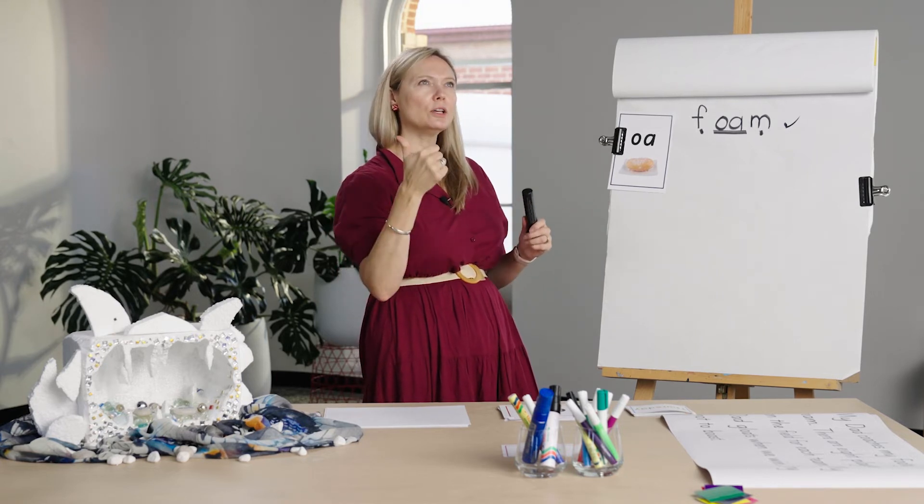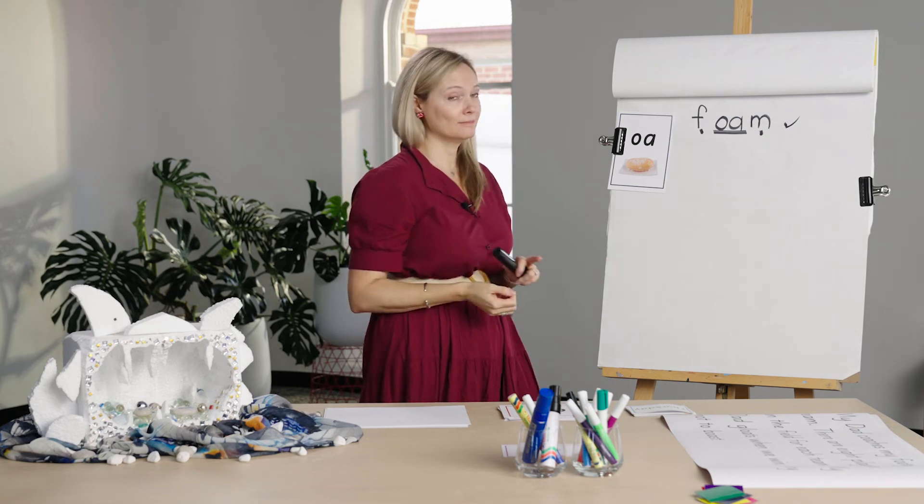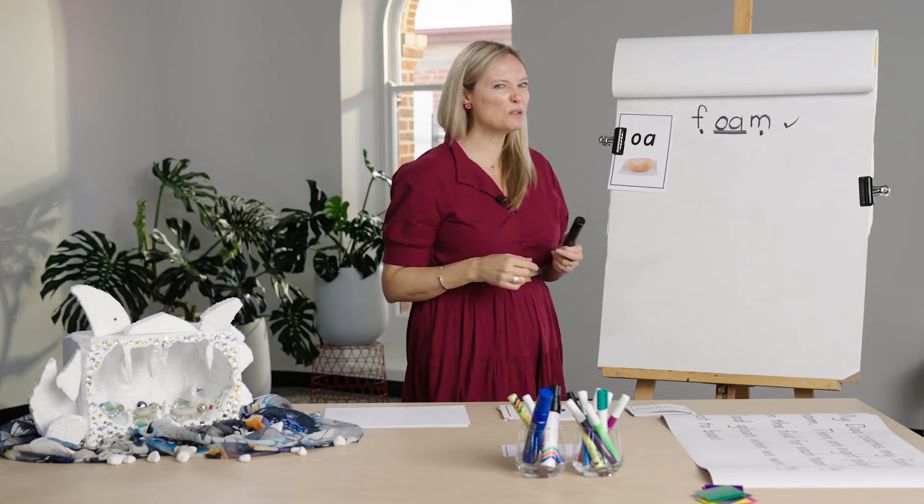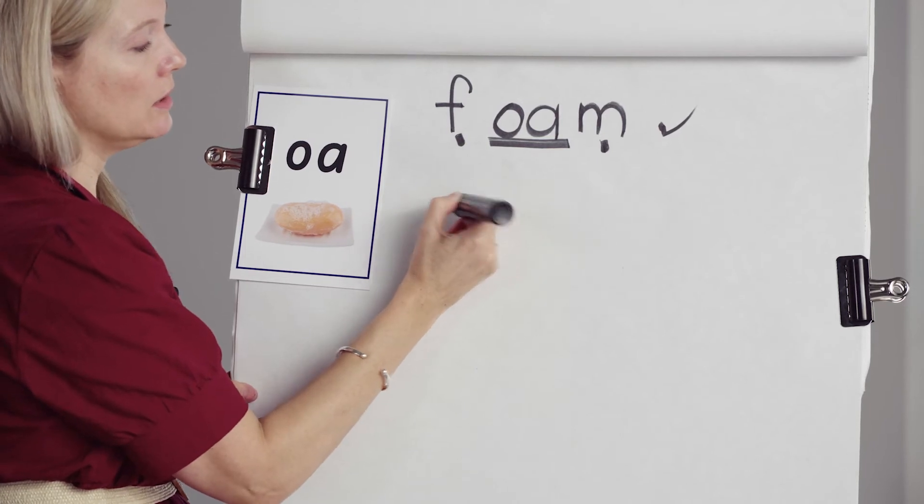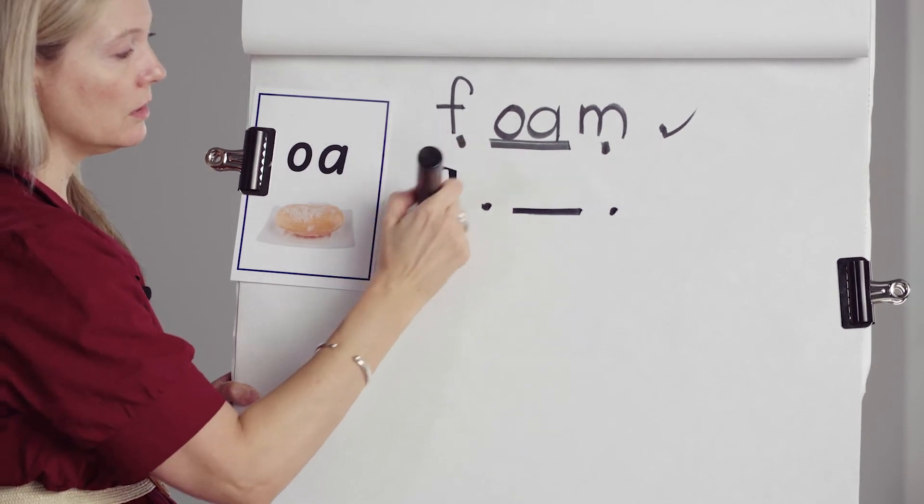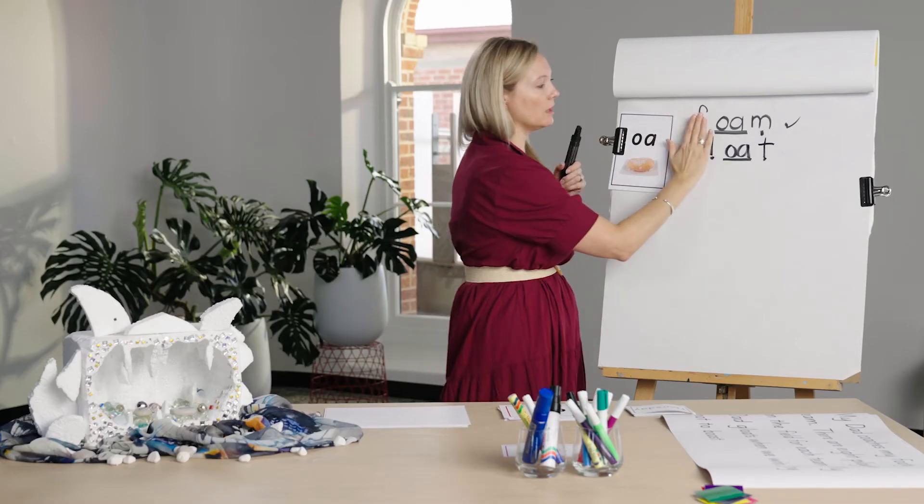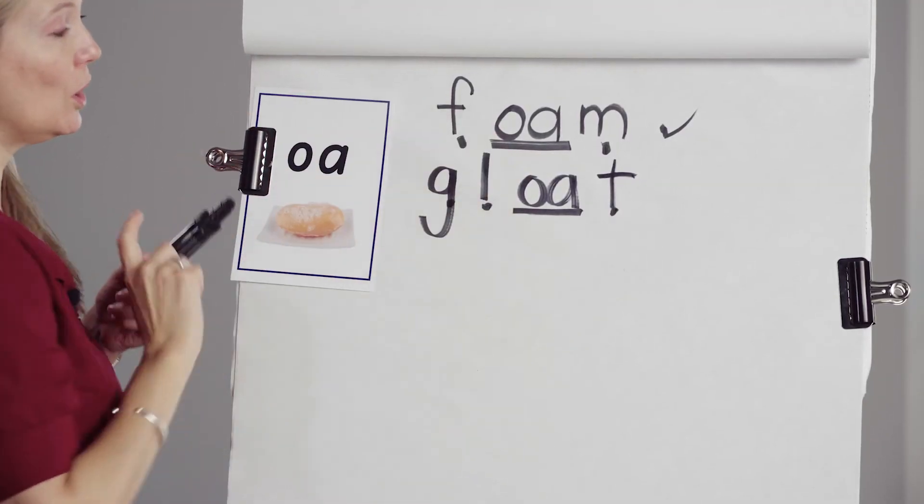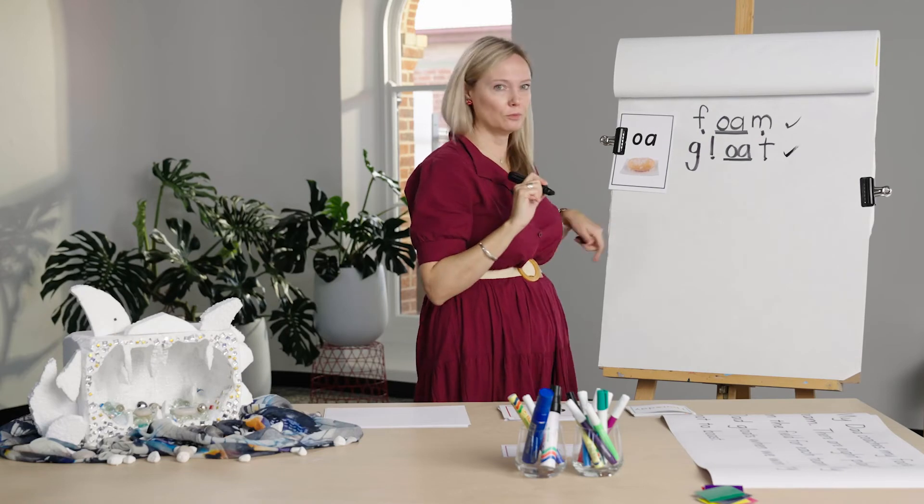Next one. Gloat. G-l-o-a-t. Four phonemes. I like to gloat about my amazing spelling. Gloat means to show off a bit. Come on, show off with me. Show everyone you're writing. G-l-o-a-t. Gloat. If I took off the t, is it the end of my word? Gloat. Let's gloat. Oh, my spelling is so good. So proud of myself.